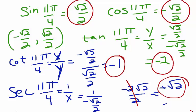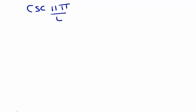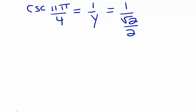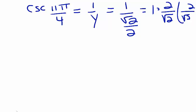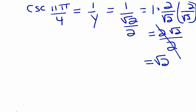Finally, for cosecant of 11 pi over 4, that's equivalent to 1 over y, which is 1 over square root 2 over 2. We multiply by the reciprocal, so we have 1 times 2 divided by square root 2. Rationalizing the denominator so we don't have a radical in the denominator, that gives us positive 2 square root 2 over 2. Cancelling the common factors, we're left with positive square root 2.